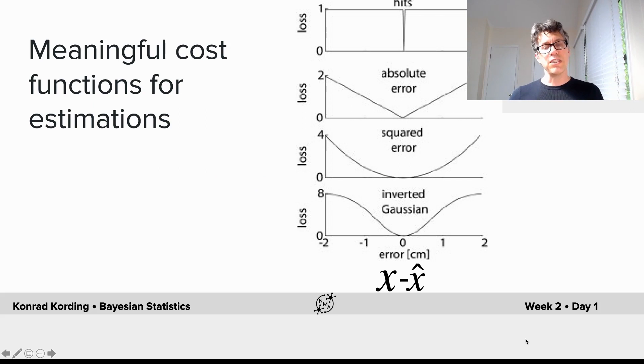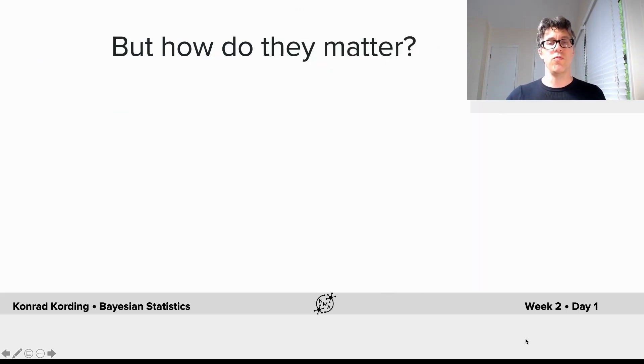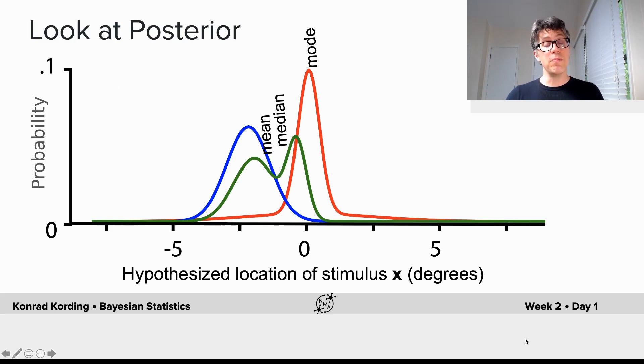The important thing is the loss function for such estimation tasks is defined in terms of the difference between what people estimate and what the stimulus really is. But how do they matter? Let's look at the posterior. Here we see in green the posterior. What do we want to estimate?